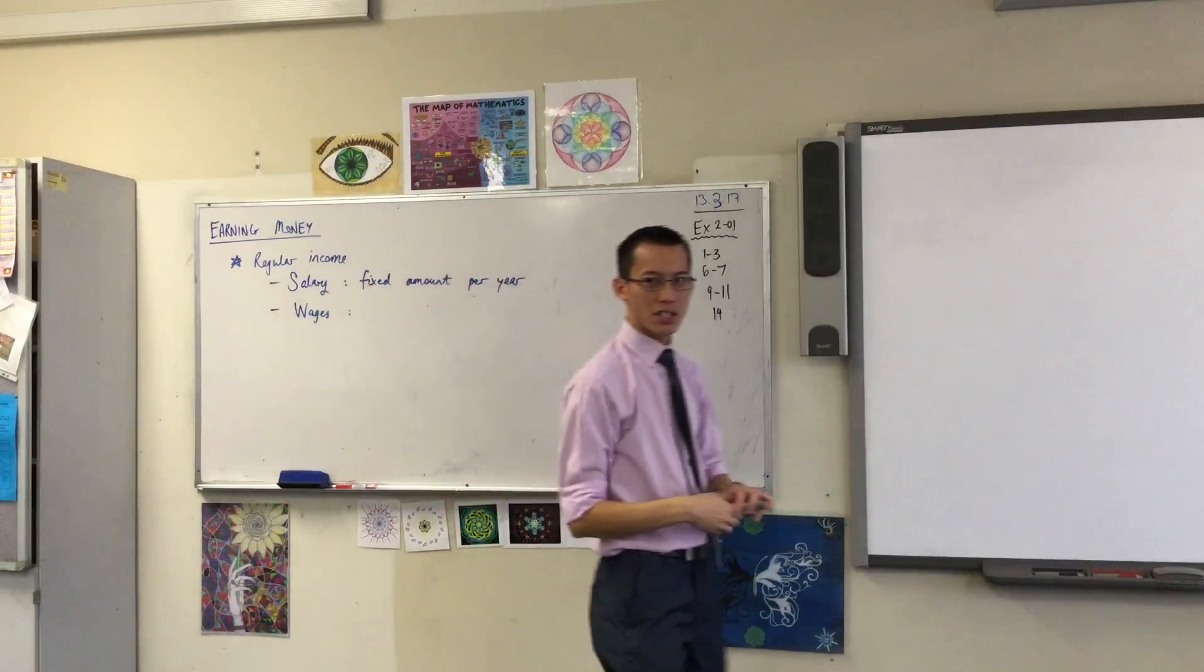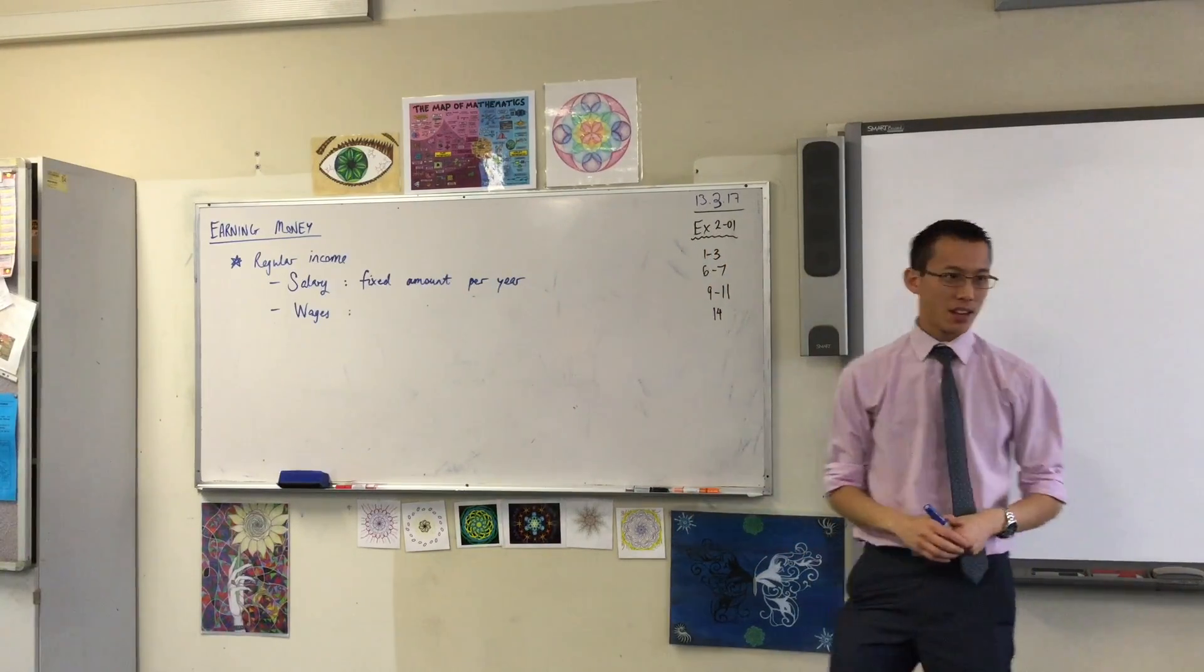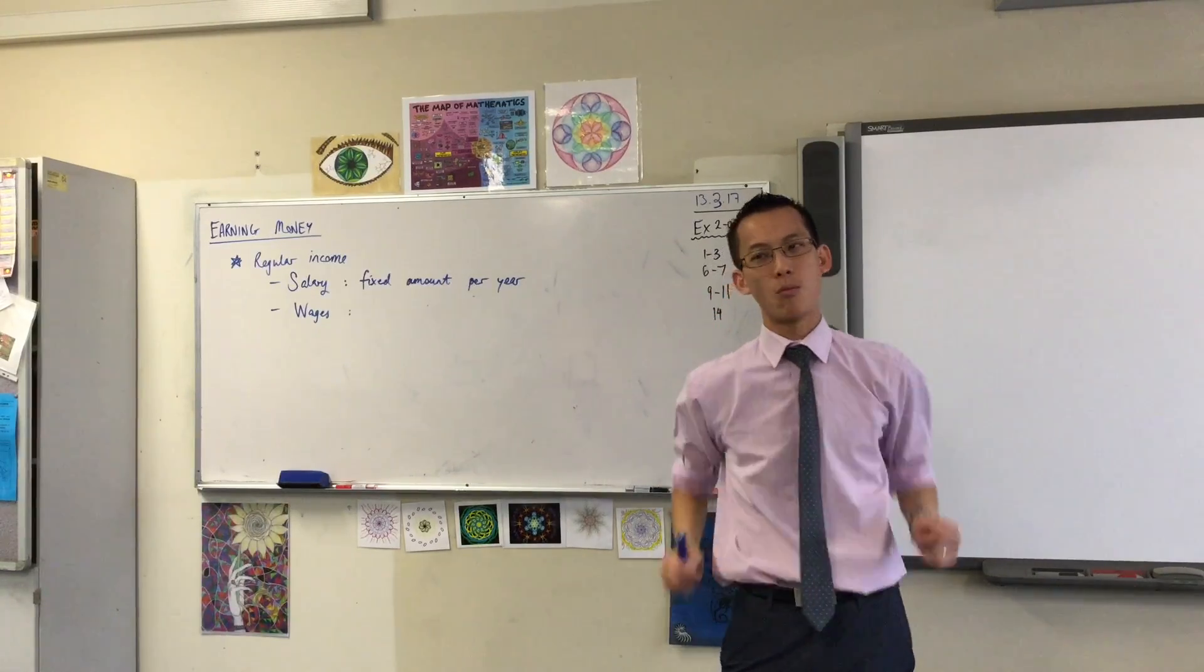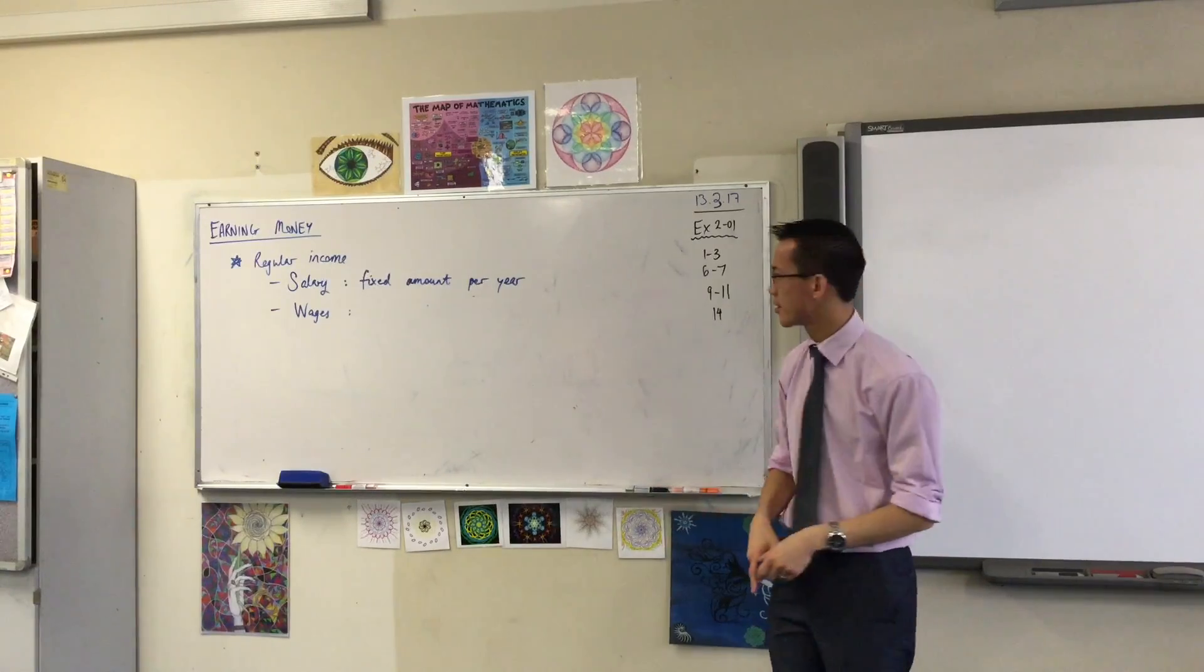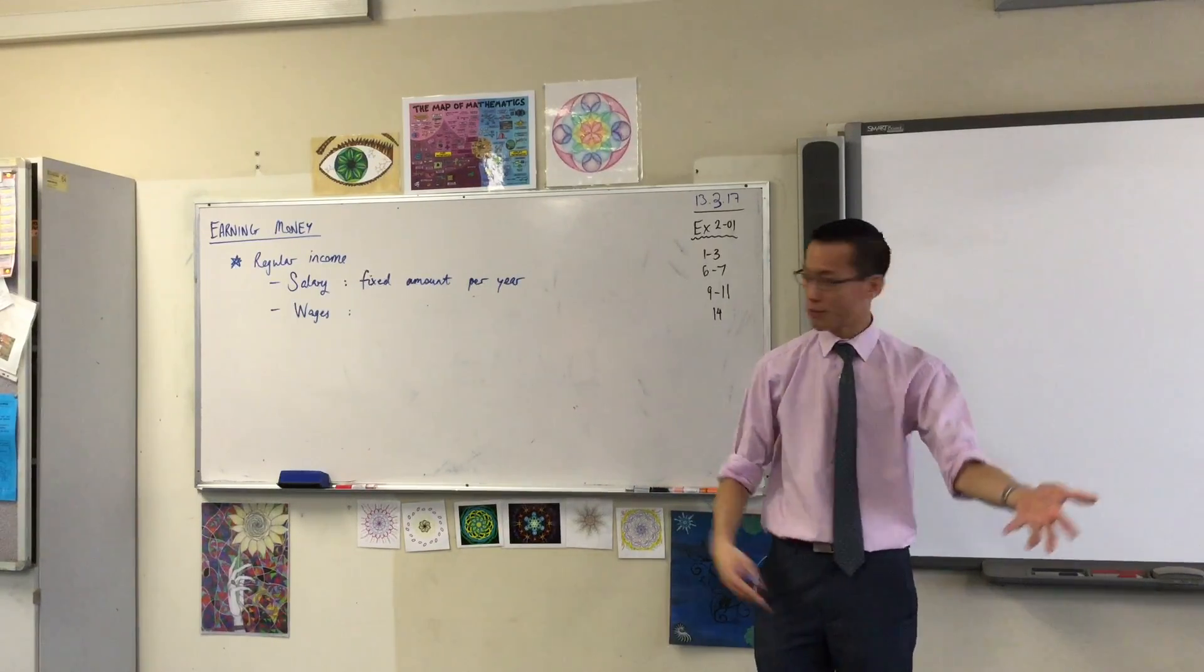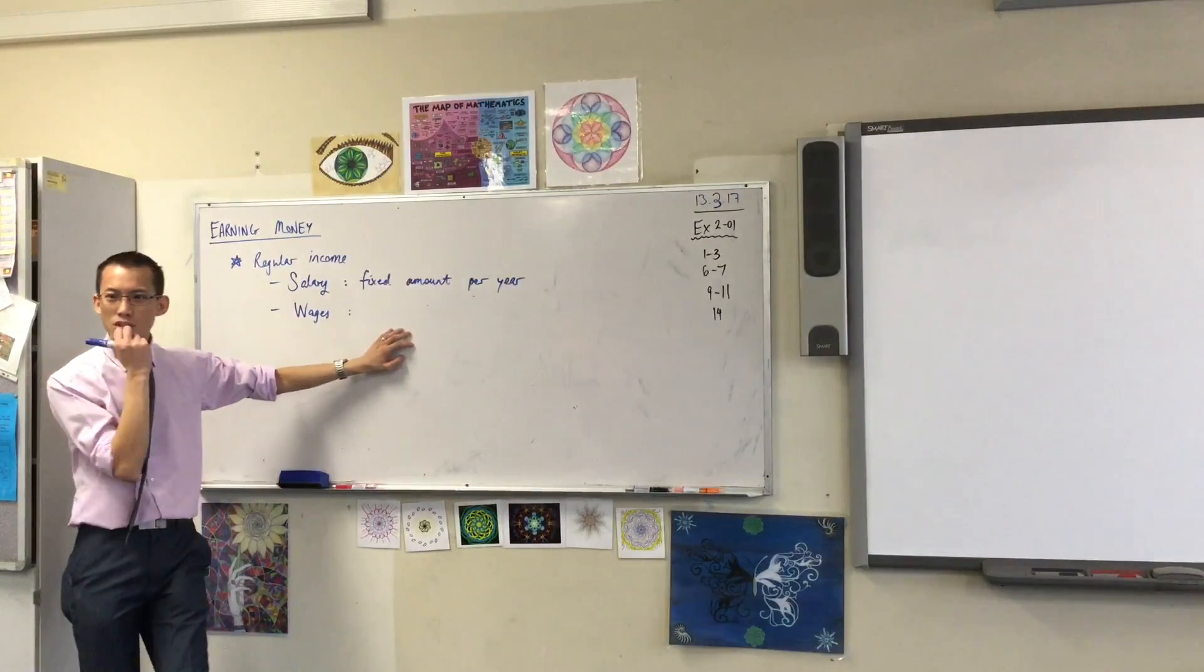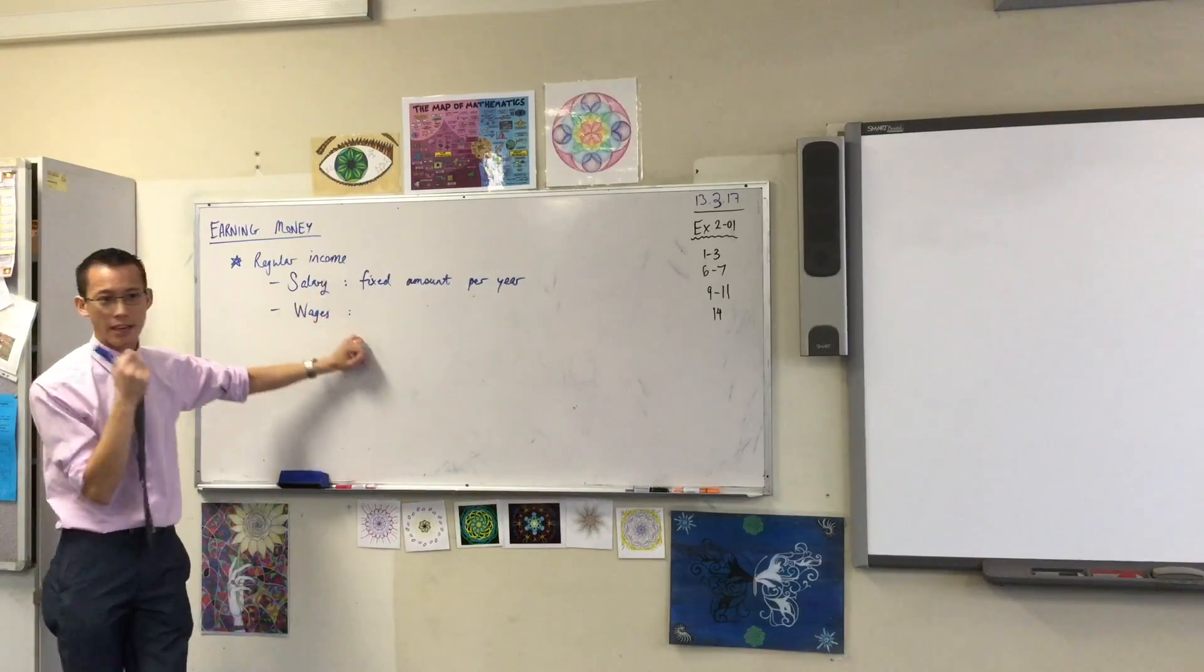Now wages still somewhat fall under this category of regular income because generally speaking you might be working, we've got you as a part-time worker at this job. You don't just blow in and blow out, you're there for a number of months but you work more hours you earn more income. So rather than fixed amount per year, how would you articulate, how do you express that?